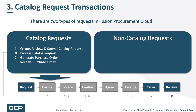Looking at the catalog request transactions — shown in the rectangle on the left — there is a subset of the procurement framework transaction steps invoked. Under catalog requests, you create, review, and submit your catalog request. The catalog request is then processed — not always a distinct visible step — and ideally the PO gets auto-generated. Generating the PO is the next step, followed by receiving the purchase order. The catalog request uses procurement framework steps one, seven, and eight.